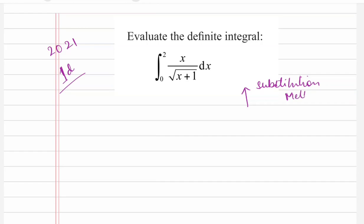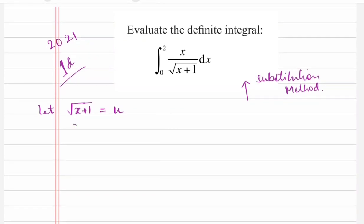Substitution method — because when I look at it, I can't think of any other way of solving it. So let's substitute: let x plus 1 equals u, which gives us x plus 1 equals u squared. If I differentiate that, it gives me dx equals 2u du.